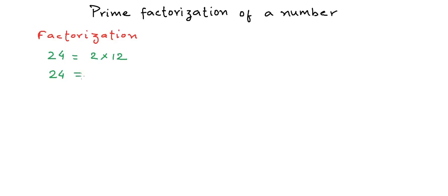We could write 24 as 3 into 8, or even in terms of more than one factor, like 2 into 3 into 4. Now prime factorization, as should be obvious from the name itself, would be writing the number as multiples of its prime factors only.